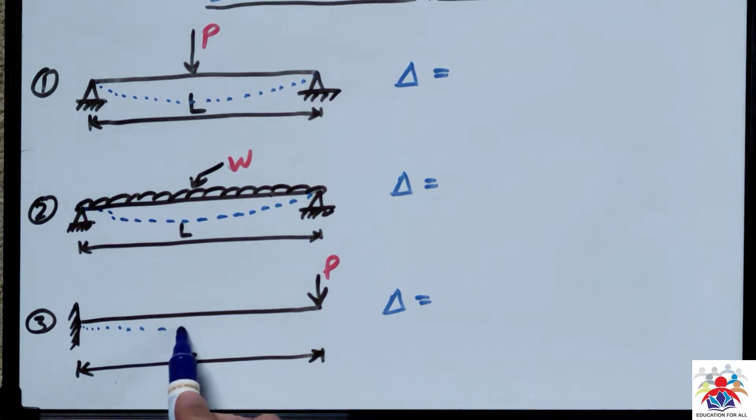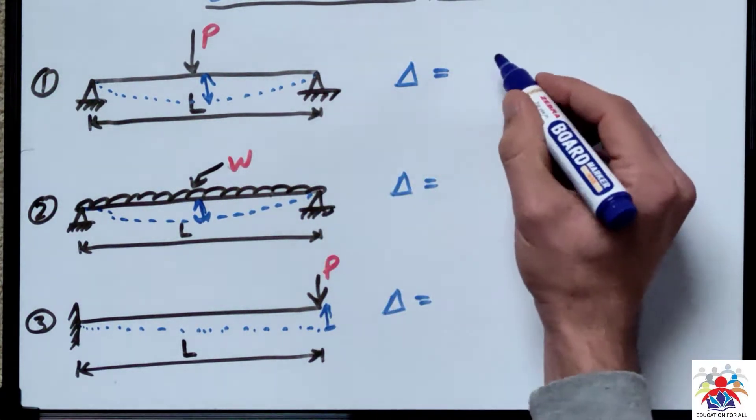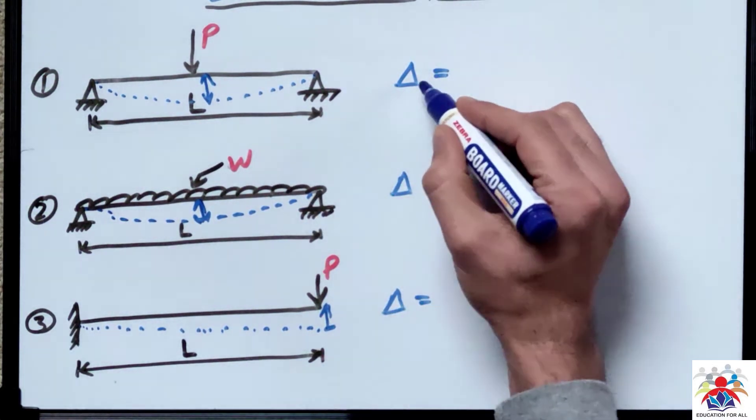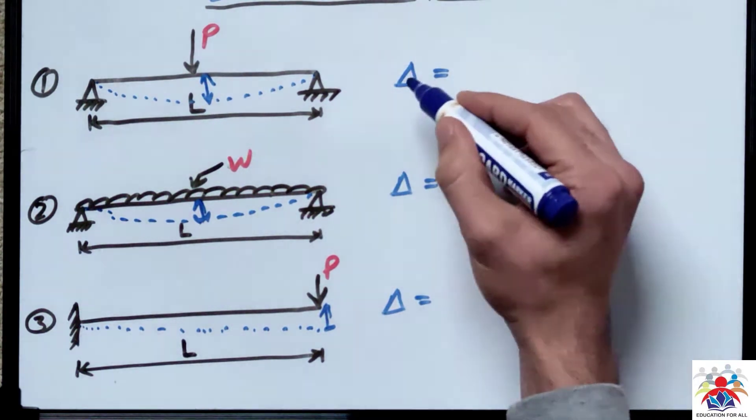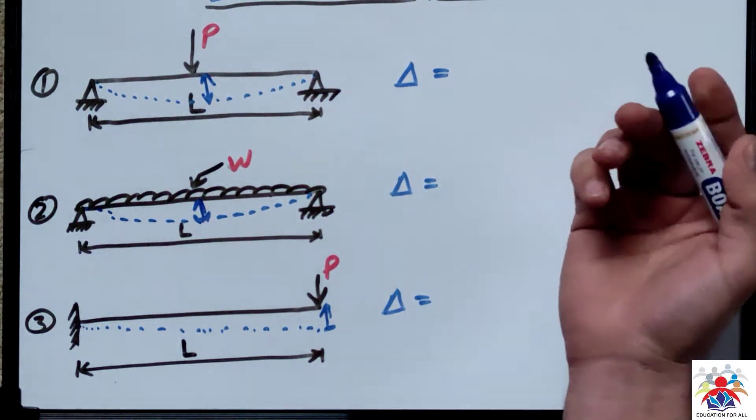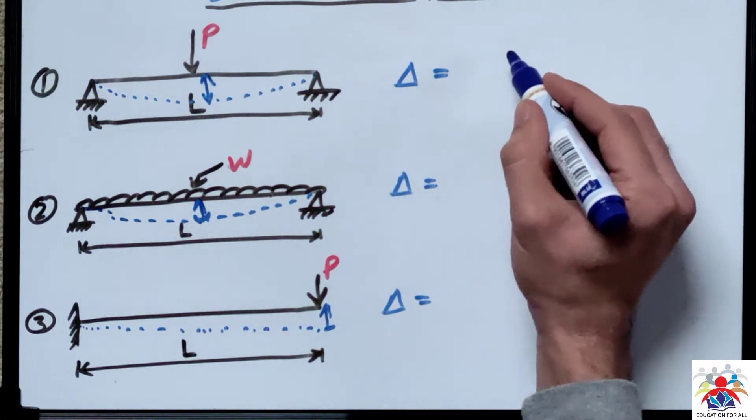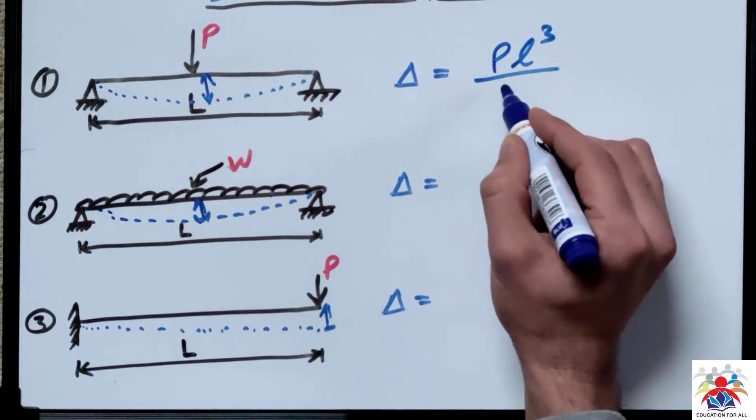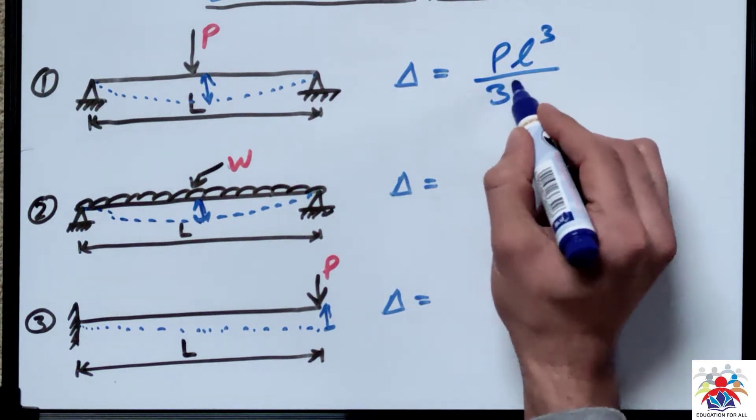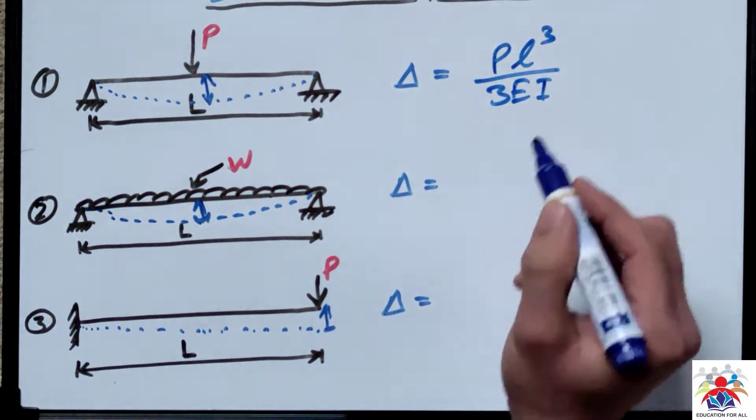The deflection shape - this is I'm trying to draw a deflection shape. What is the formula for this one? For simply supported beam we have delta, which expresses the deflection. Delta max you can write, or delta is the same thing. So P L cubed divided by 3EI.